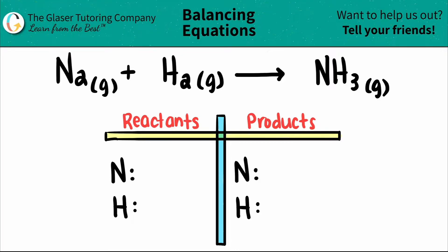Today, we are going to be balancing the equation of nitrogen gas, N2, plus hydrogen gas, which is H2, and that yields ammonia, which is NH3.